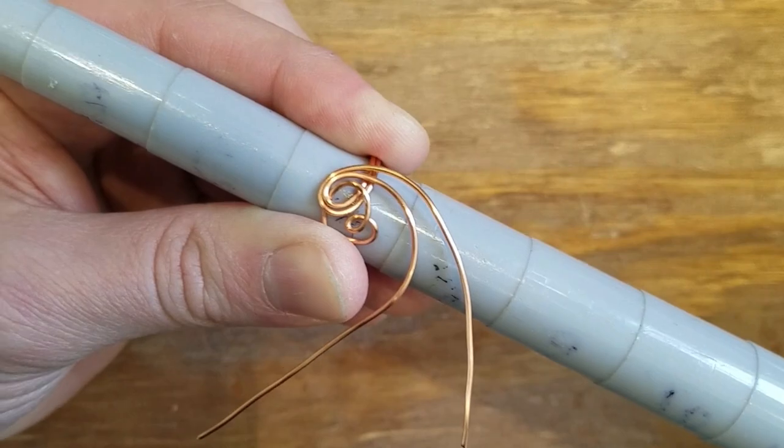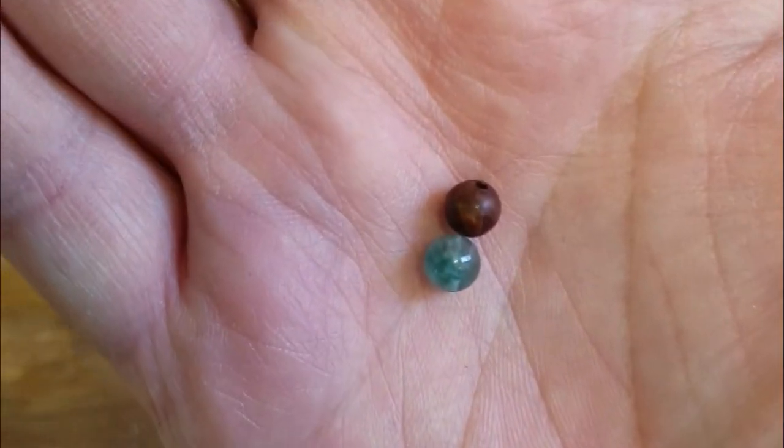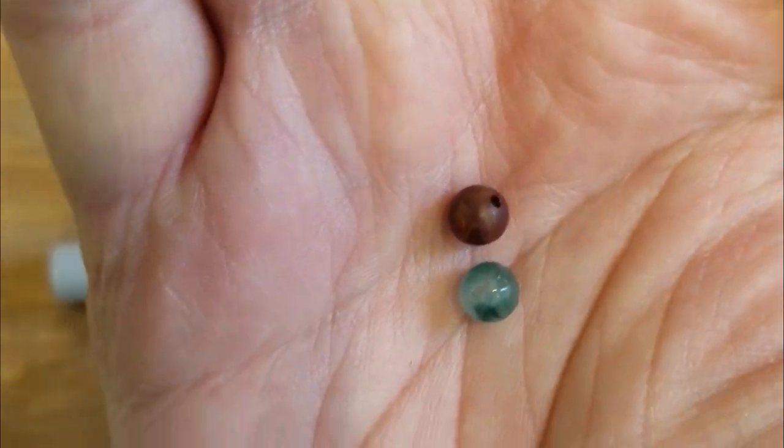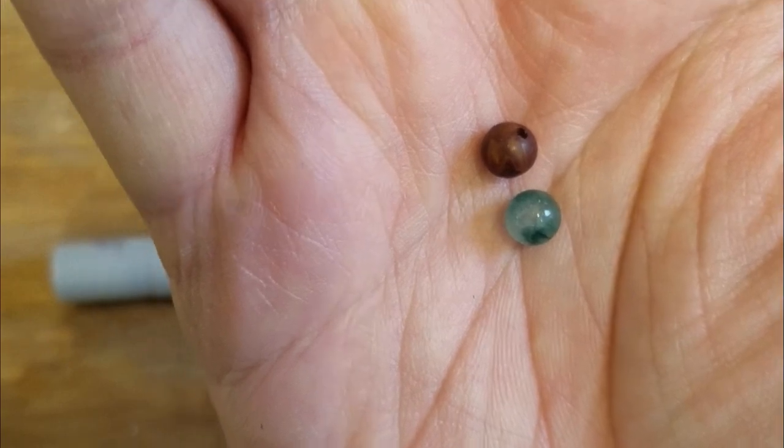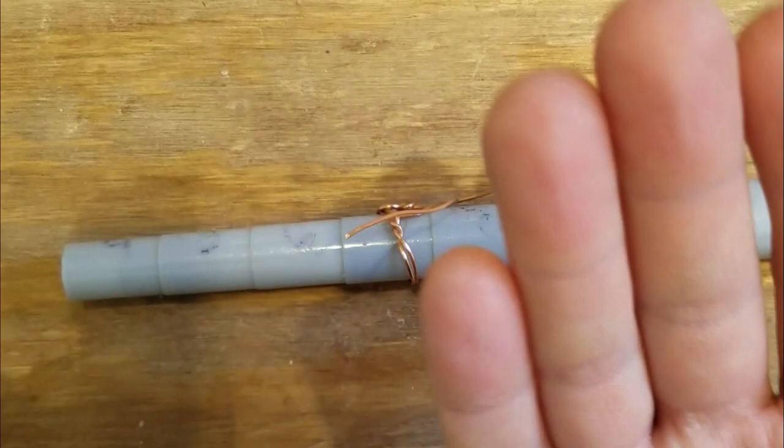This works best with four millimeter or six millimeter stones. I'm going to do one of each. I wanted to do four millimeter, but I can't find any that have holes that will fit 18 gauge. Four millimeter, usually the beads are only drilled to fit 20 gauge. So, 18 gauge, we got to use six millimeter beads. That's all right. It'll still look good.